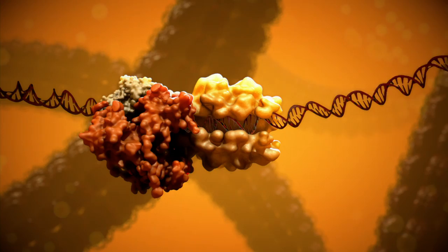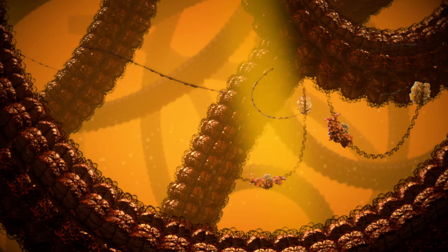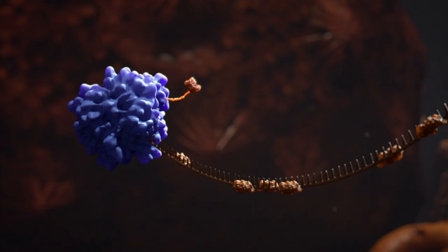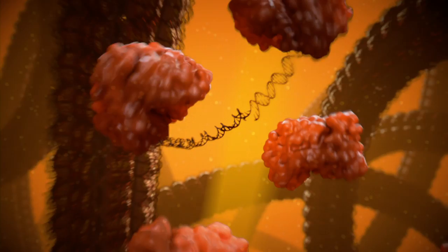First, DNA is copied into RNA in the nucleus. This messenger RNA moves outside the nucleus, where molecular machines called ribosomes use the code written into the RNA to construct the DNA repair proteins. These proteins travel back into the nucleus, where they locate the damaged DNA and repair it.